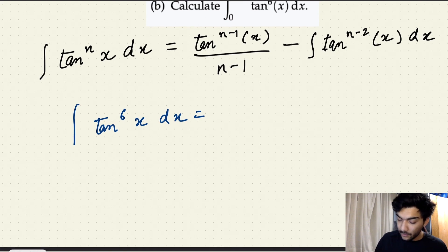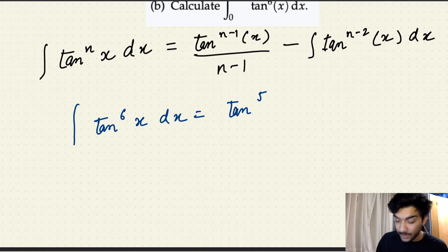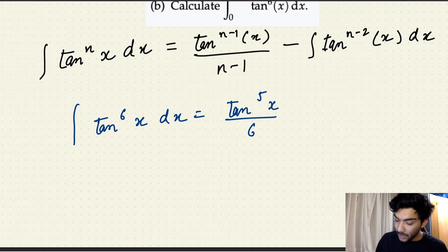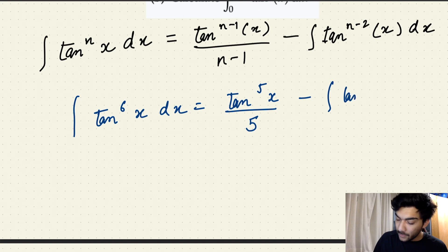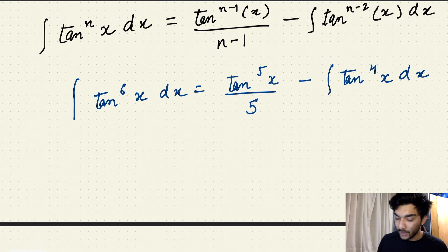The first expression would be tan to the power n minus 1 — since n is 6, that's tan to the power 5 of x — upon n minus 1, which is 6 minus 1, giving 5 in the denominator. Now this expression reduces to calculating the indefinite integral of tan to the power 4 of x dx.